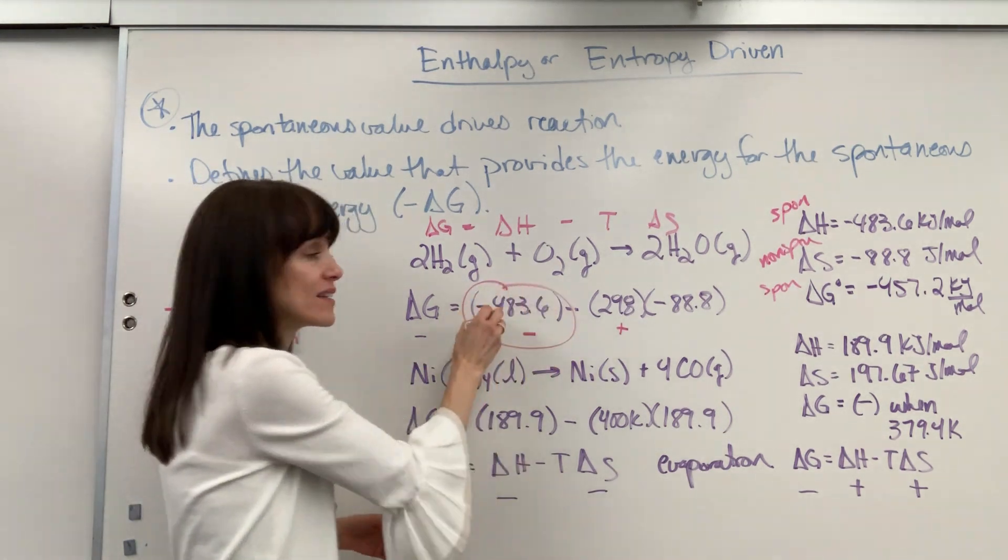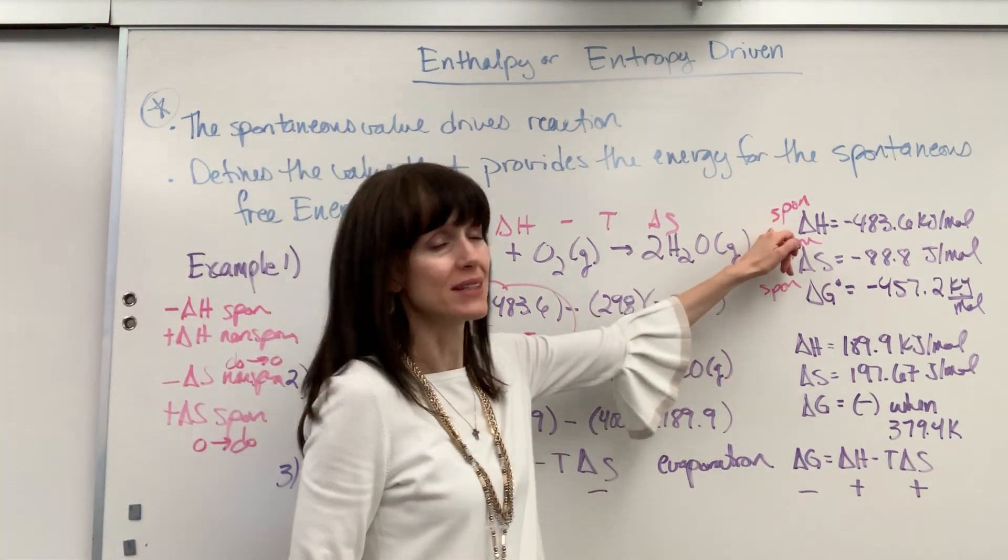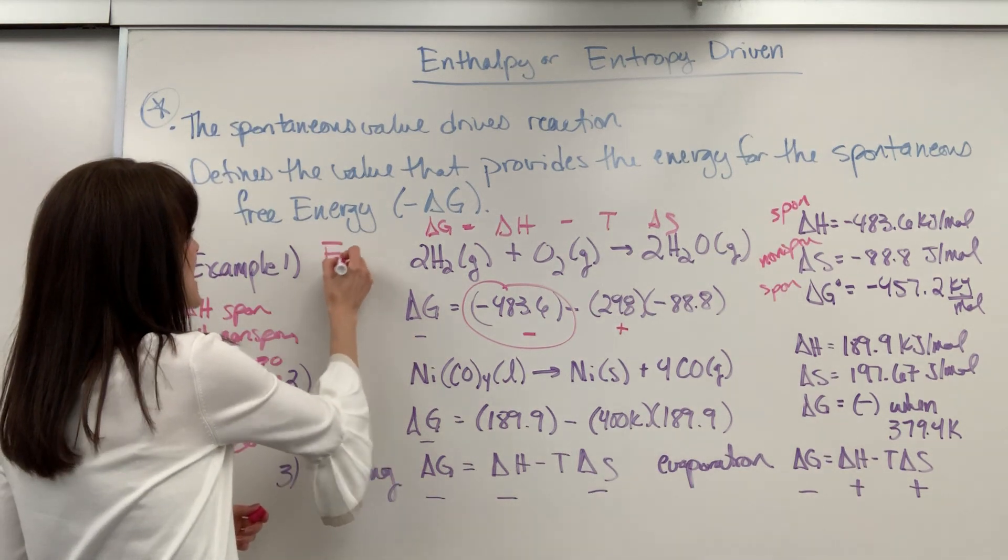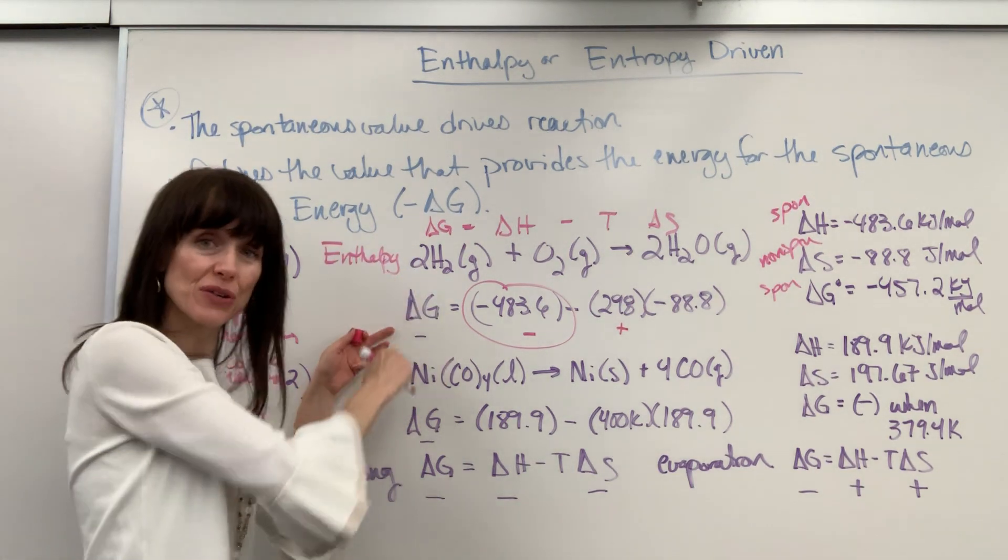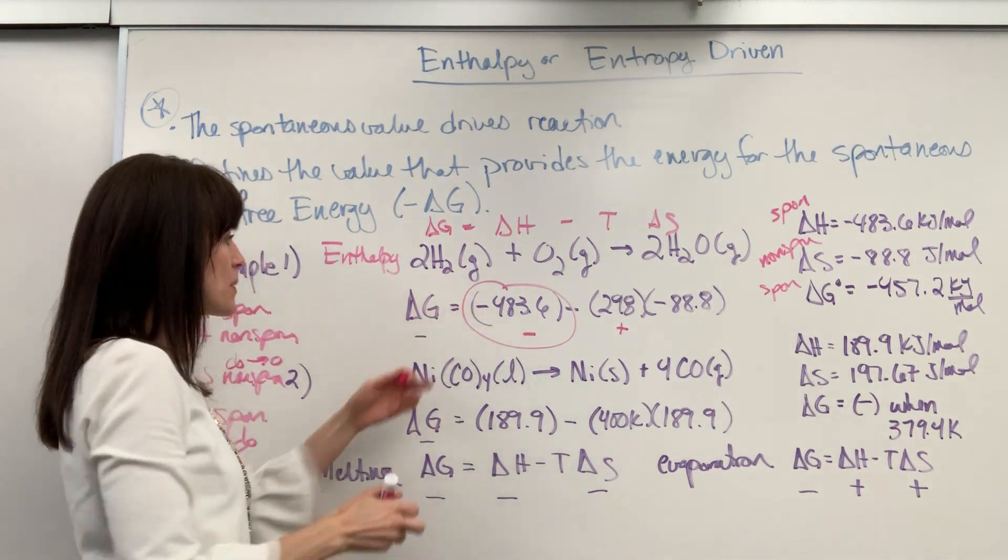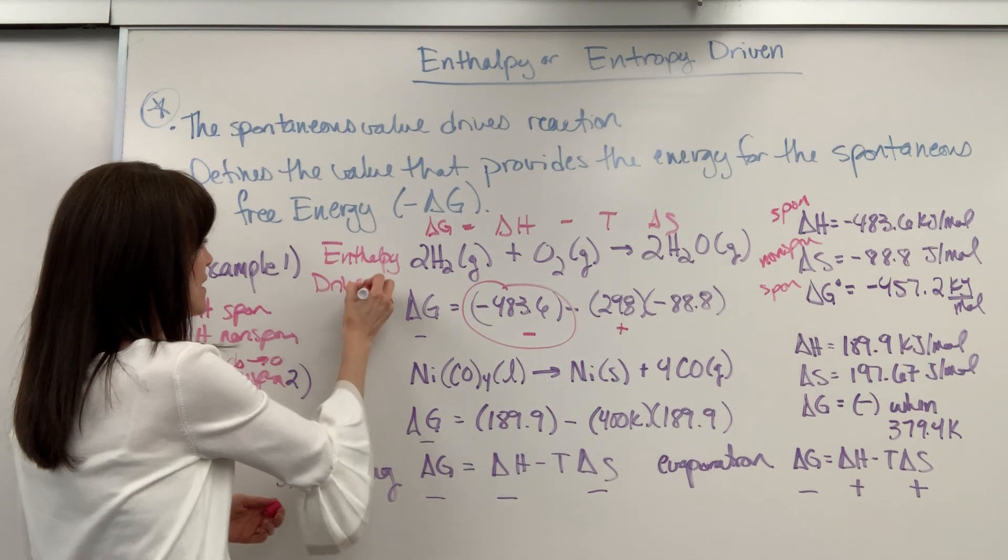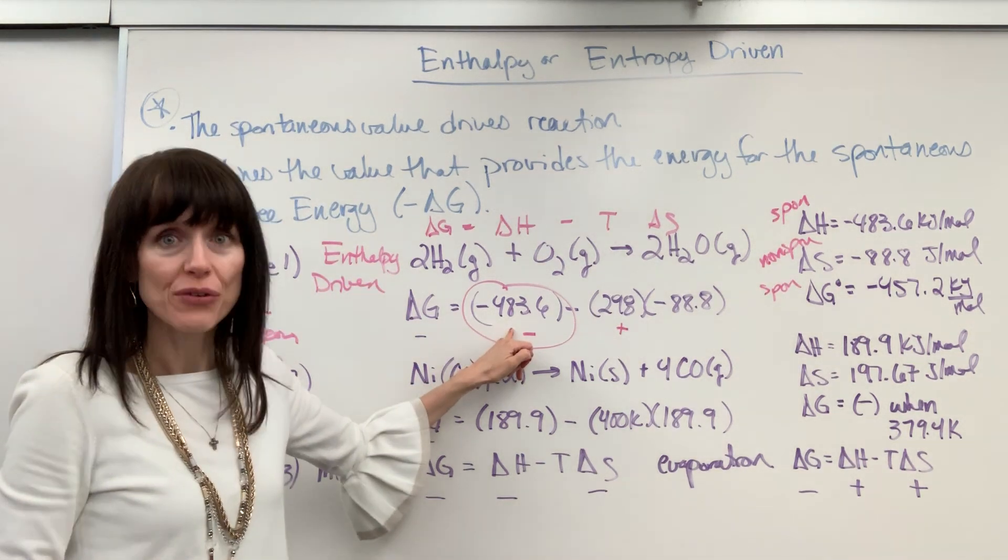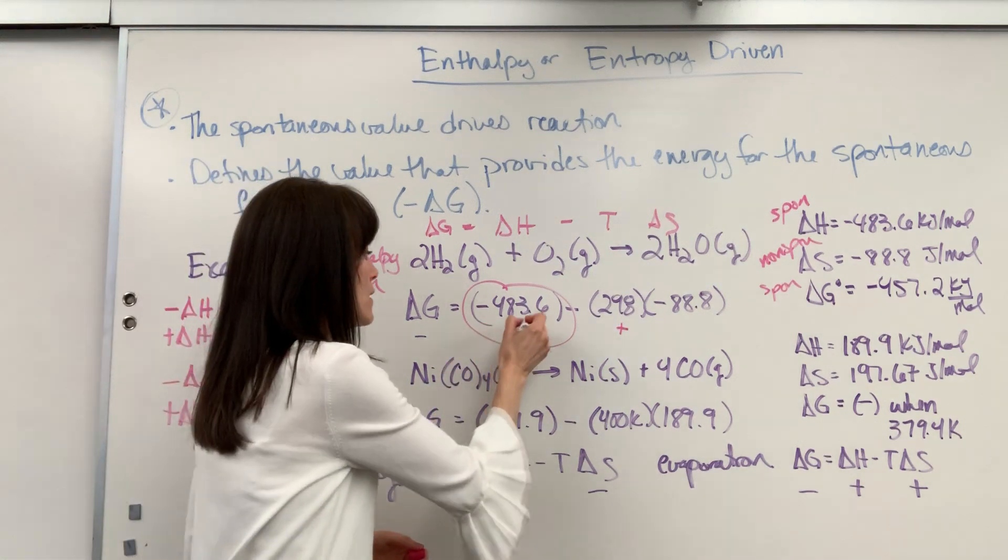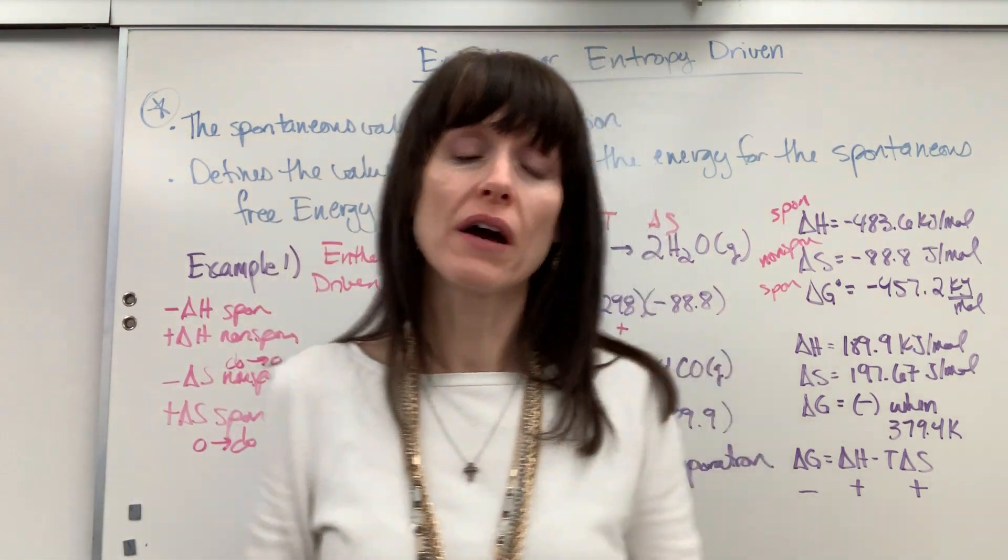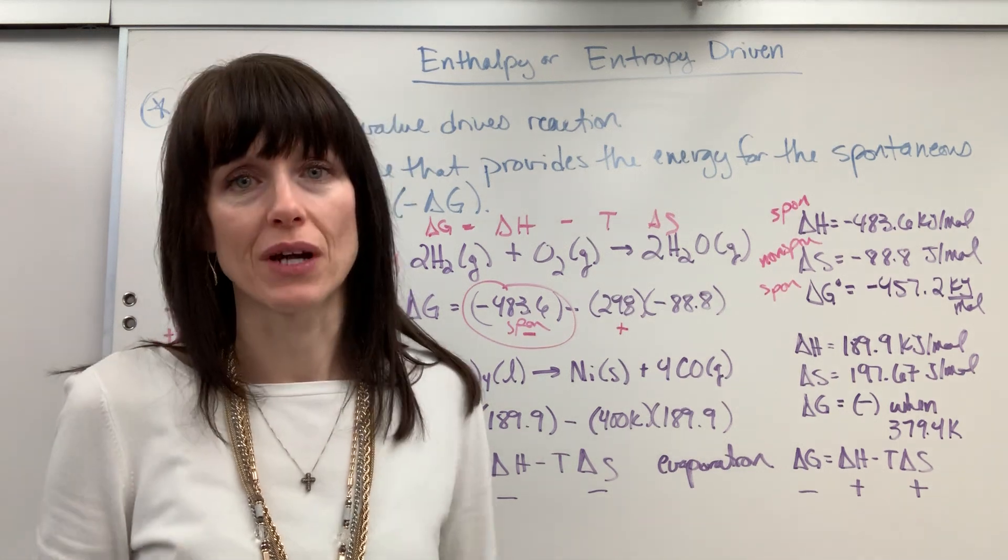That, the delta H. And what do you know about delta H? It's spontaneous. So this right here is enthalpy. What provides the negative value for that delta G to make that spontaneous? It is enthalpy driven. It's the negative from the delta H because it's spontaneous. So really, the fast way to look at this, if you have the value of delta H and delta S, whichever one is spontaneous, that's what drives it.